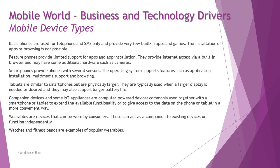Companion devices are basically your wearable devices — Fitbits and any sort of Bluetooth devices which you connect to your phone, which can display messages on the screen on the go. Companion devices are IoT appliances for computer-powered devices commonly used together with a smartphone or tablet to extend available functionality or to give access to the data on the phone in a more convenient way. Wearable devices are devices that can be worn by the customer and can act as a companion to existing devices or function independently.